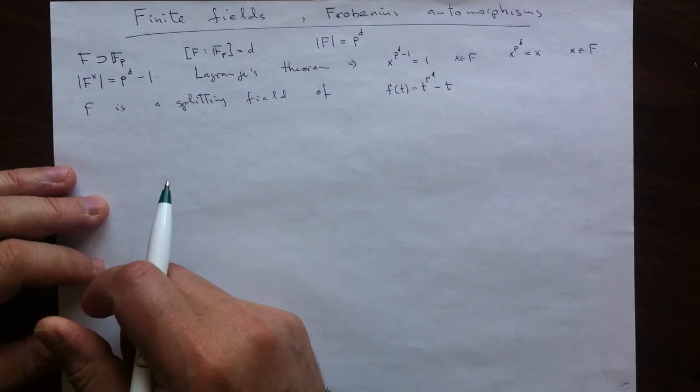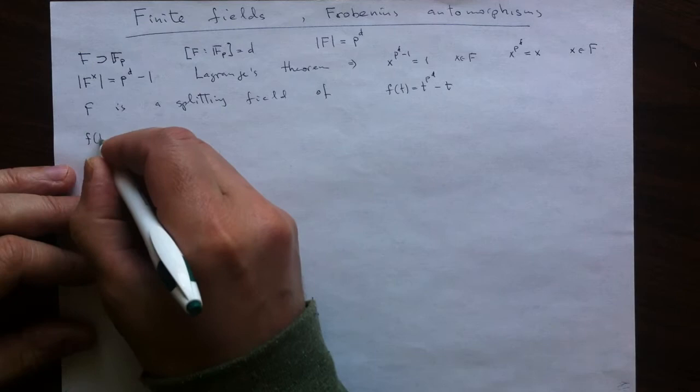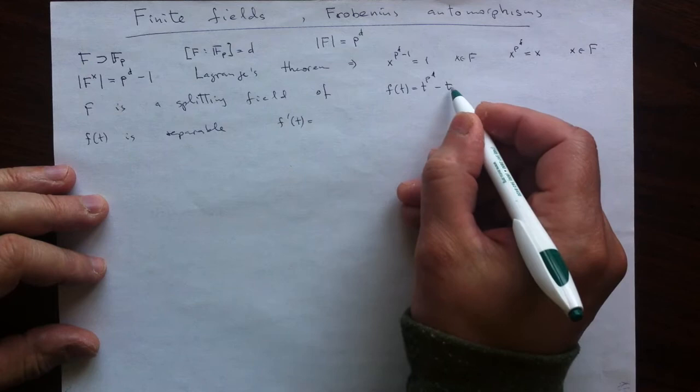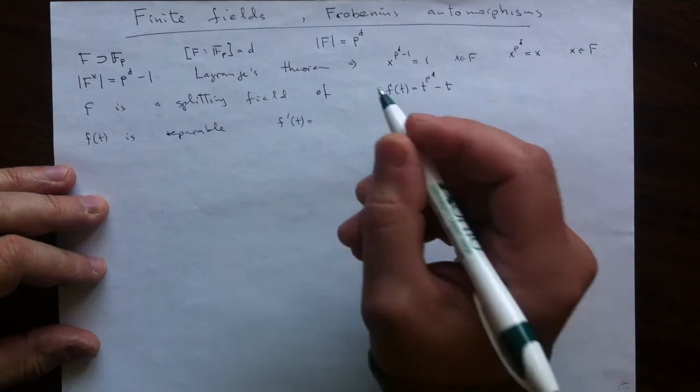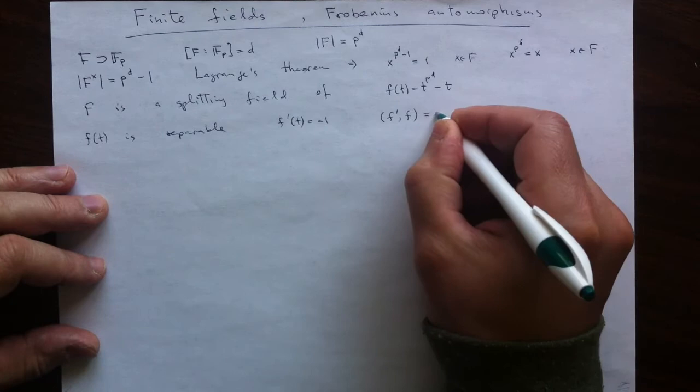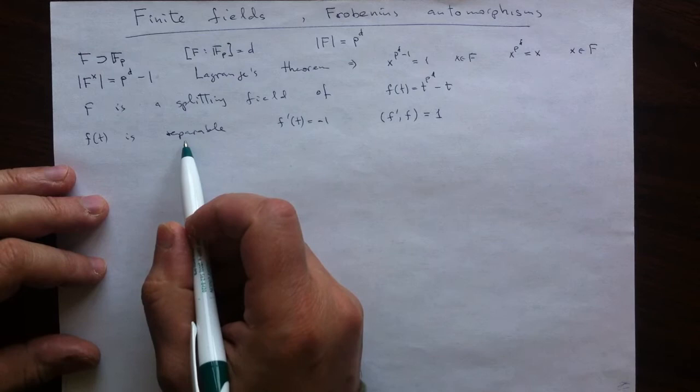Well, simply because this polynomial is separable, which can be seen by computing its derivative, which happens to be just negative 1, because the derivative of this monomial is 0. p is 0 when seen as a coefficient. So negative 1 as a derivative makes the greatest common divisor 1. The polynomial is separable.